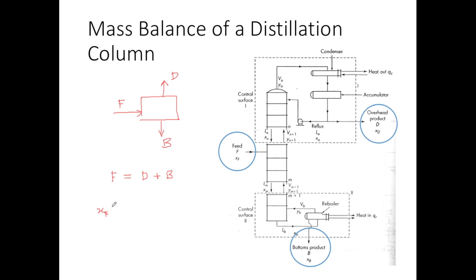Using the mole fraction, the amount of moles of one component in the feed is XF times F, and this equals XD times D plus XB times B. This equation shows that the amount of moles of one component coming in should equal the amount of moles going out of the unit.